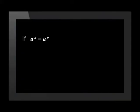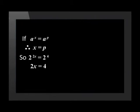Before we start, it is very important to know the following. If a to the power of x is equal to a to the power of p, we know that x has the same value as p. So for 2 to the power of 2x equals 2 to the power of 4, we know that 2x is equal to 4. If we solve for x, we get x equals 2.